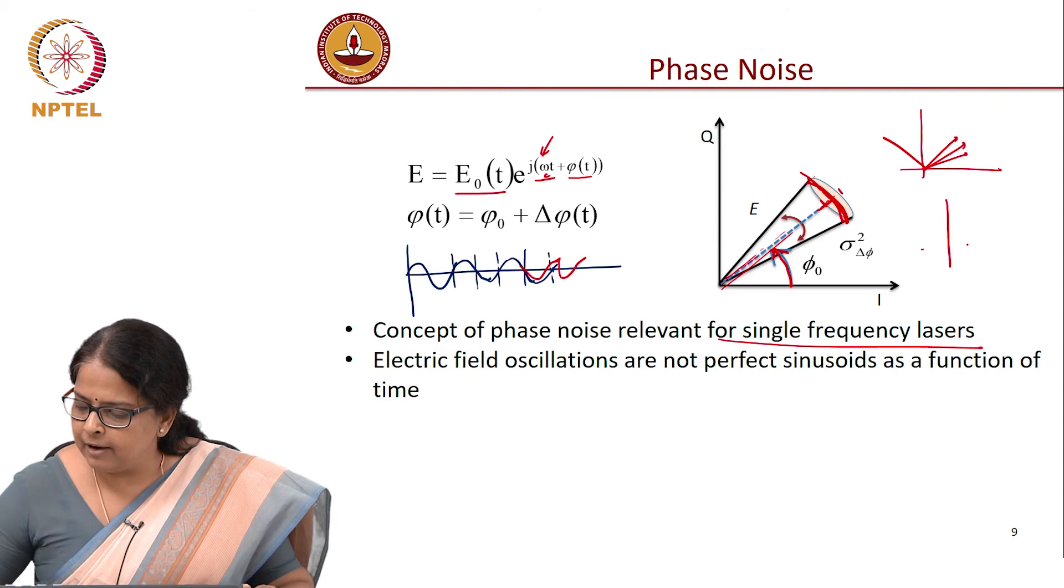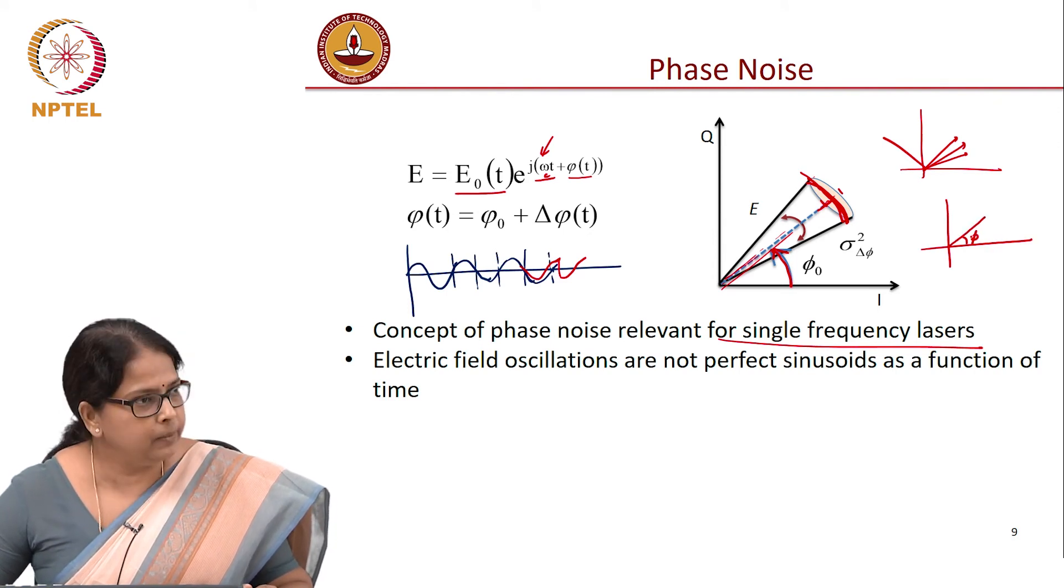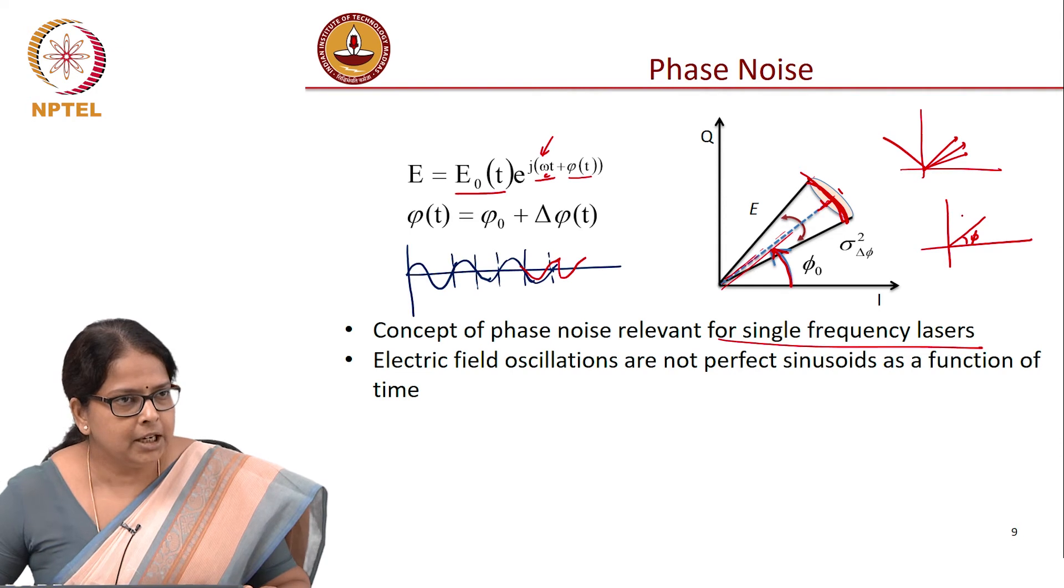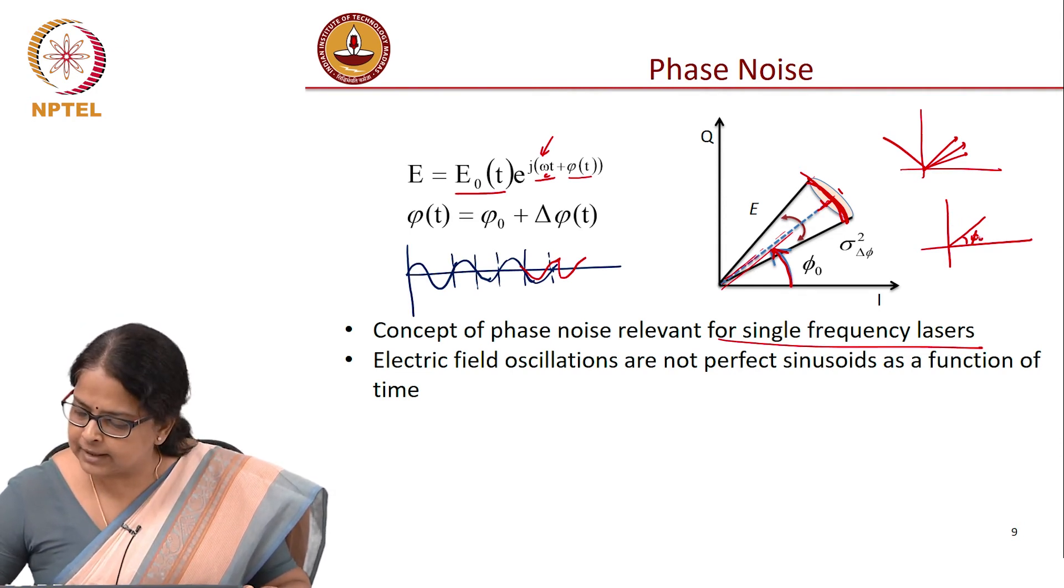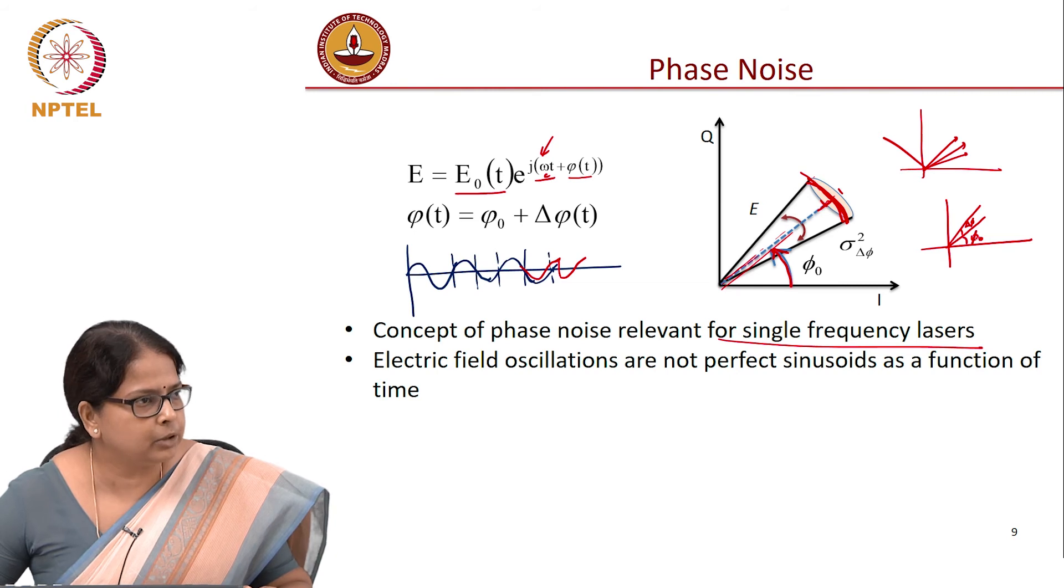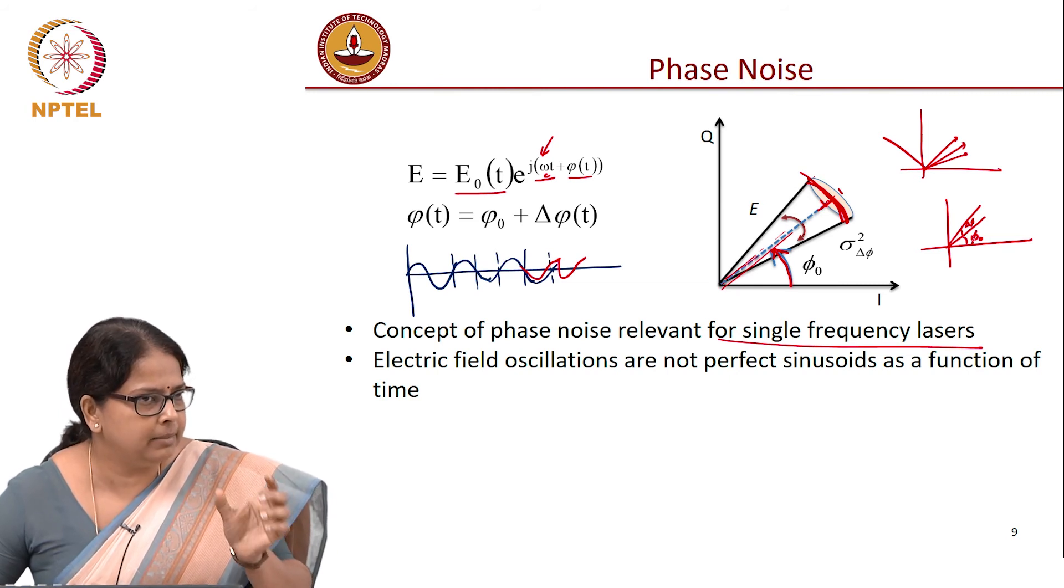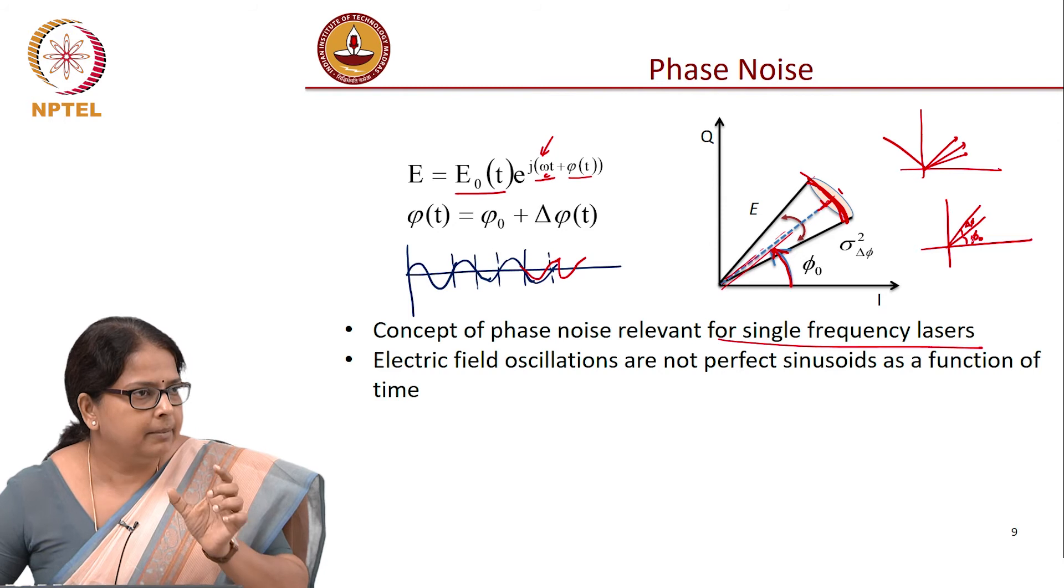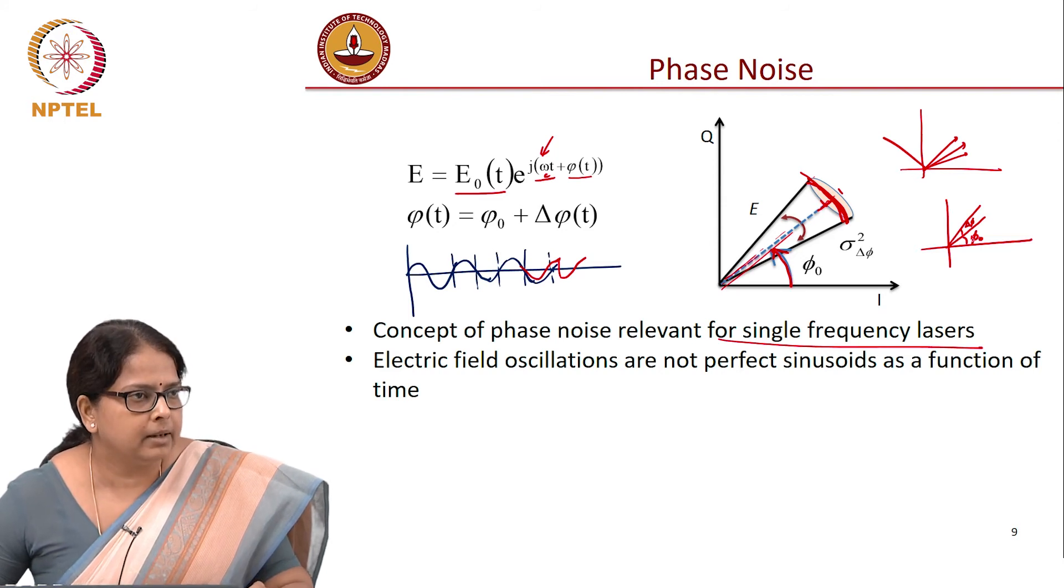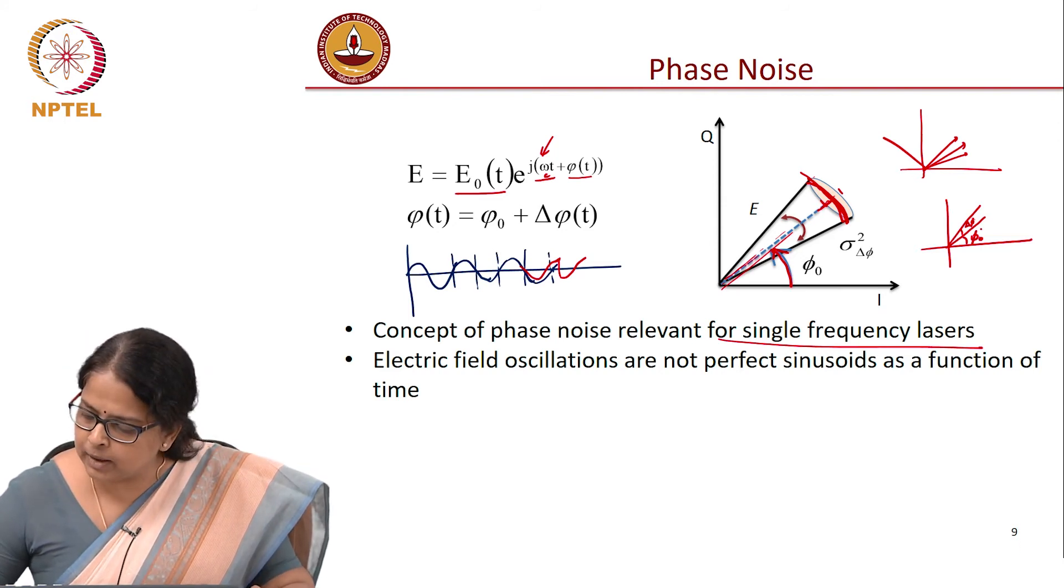What will happen is, if the oscillation is corresponding to this phase now, the next oscillation is going to be at a phase which is this, let us say phi naught plus a delta phi which is a Gaussian random variable, zero mean Gaussian random variable with respect to this. Well, it is not zero mean, the mean is decided by something else, but that is the Gaussian random variable.